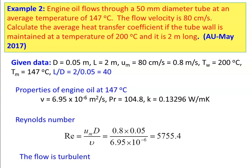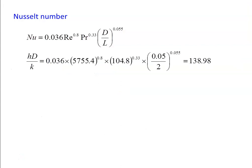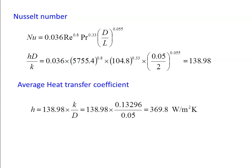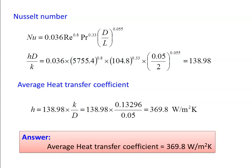For turbulent flow, Nusselt number = 0.036 × RE⁰·⁸ × Pr⁰·³³ × (D/L)⁰·⁰⁵⁵ = 0.036 × 5755.4⁰·⁸ × 104.8⁰·³³ × (0.05/2)⁰·⁰⁵⁵ = 138.98. Average heat transfer coefficient H = Nu × k/D = 138.98 × 0.13296 / 0.05 = 369.8 W/m²·K.